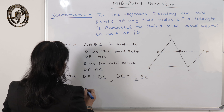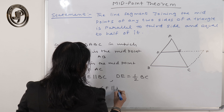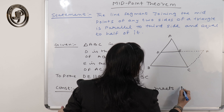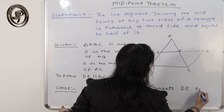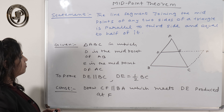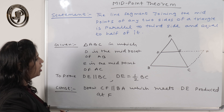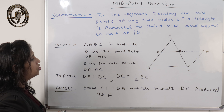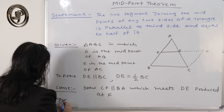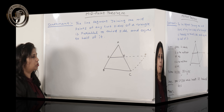In the construction: draw CF parallel to BA, which meets DE produced at F. So CF is constructed parallel to BA, meeting DE at point F. Now let's start the proof.